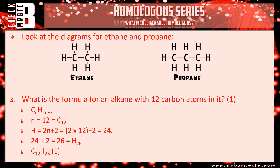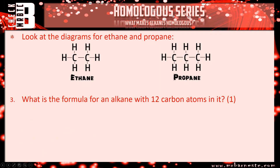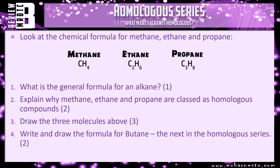That brings this video to an end, but I have a review question for you. Look at the chemical formulas for methane, ethane, and propane. Question one: what's the general formula? Question two: explain why methane, ethane, and propane are classed as homologous compounds. Question three: draw the three molecules using stick diagrams. Question four: write and draw the formula for butane, the next in the homologous series — it has four carbons, so work out the hydrogens and draw it.